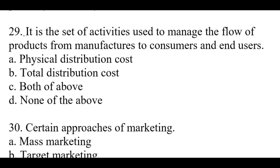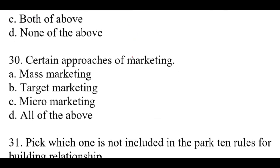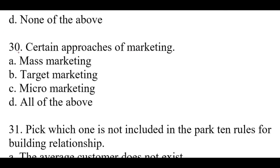Question number twenty-nine: It is the set of activities used to manage the flow of products from manufacturers to consumers and end users — right option is A: Physical distribution. Question number thirty: Certain approaches of marketing — right option is D, all of the above: mass marketing, target marketing, and micro marketing.